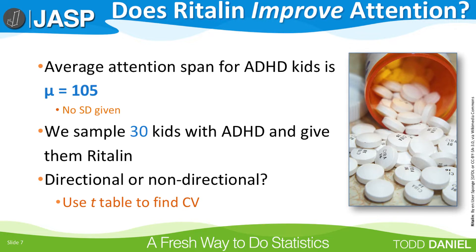The reason we are using a one-tailed test is because there is only one direction of change that is valuable to us. If the drug does not work, makes no difference, or makes attention span worse, both of those are undesirable outcomes. The only direction of change we are interested in is if attention span is significantly longer than 105. We are looking in only one direction, and we will use Student's t-table to find the critical value.